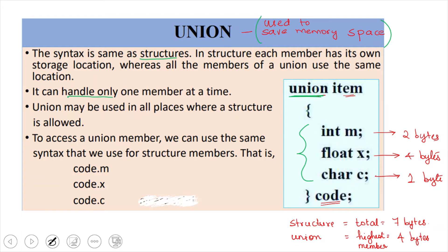We are not giving space to store all the structure members. For example, imagine we have got three structure members M, X, and C. M is of type integer, so it will require two bytes. X is of type float, so it will require four bytes, and character is having one byte. So, the total number of bytes that will be required in case of a structure will be seven bytes.